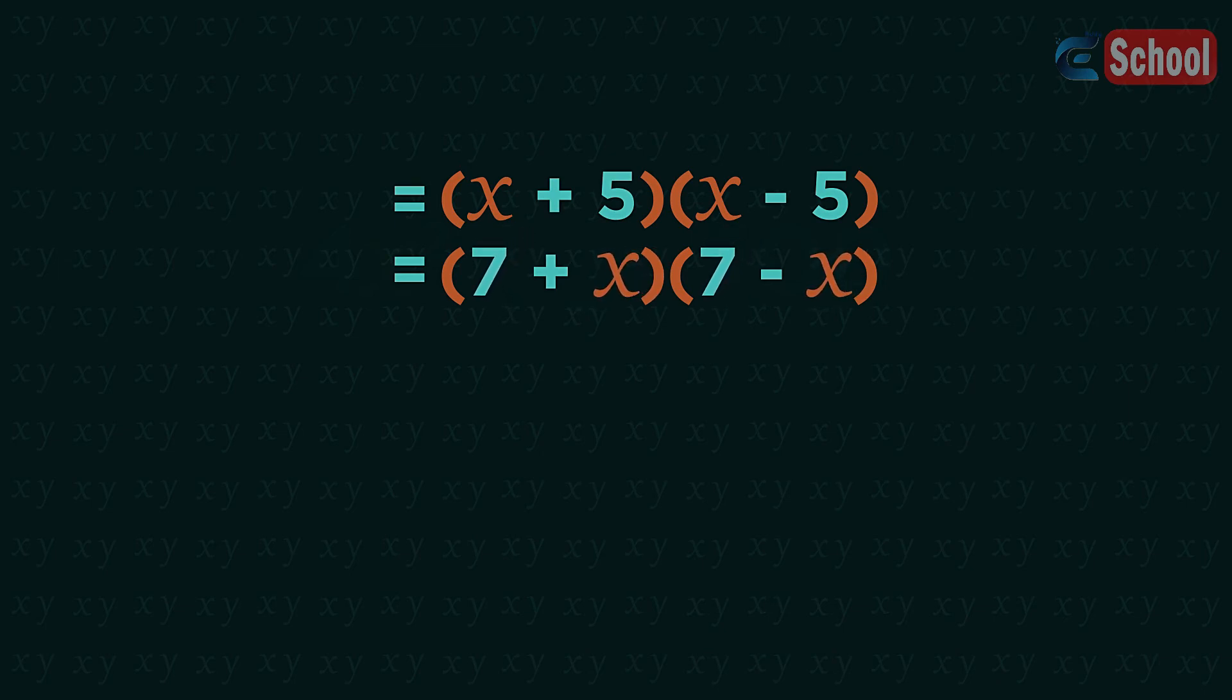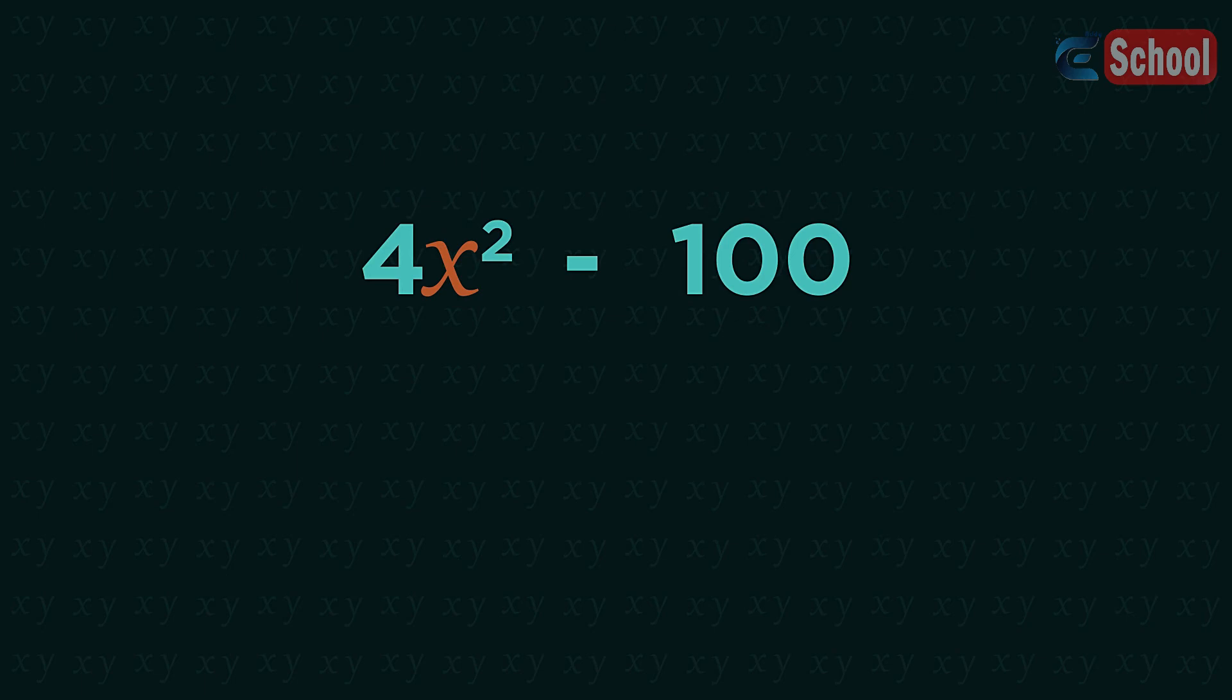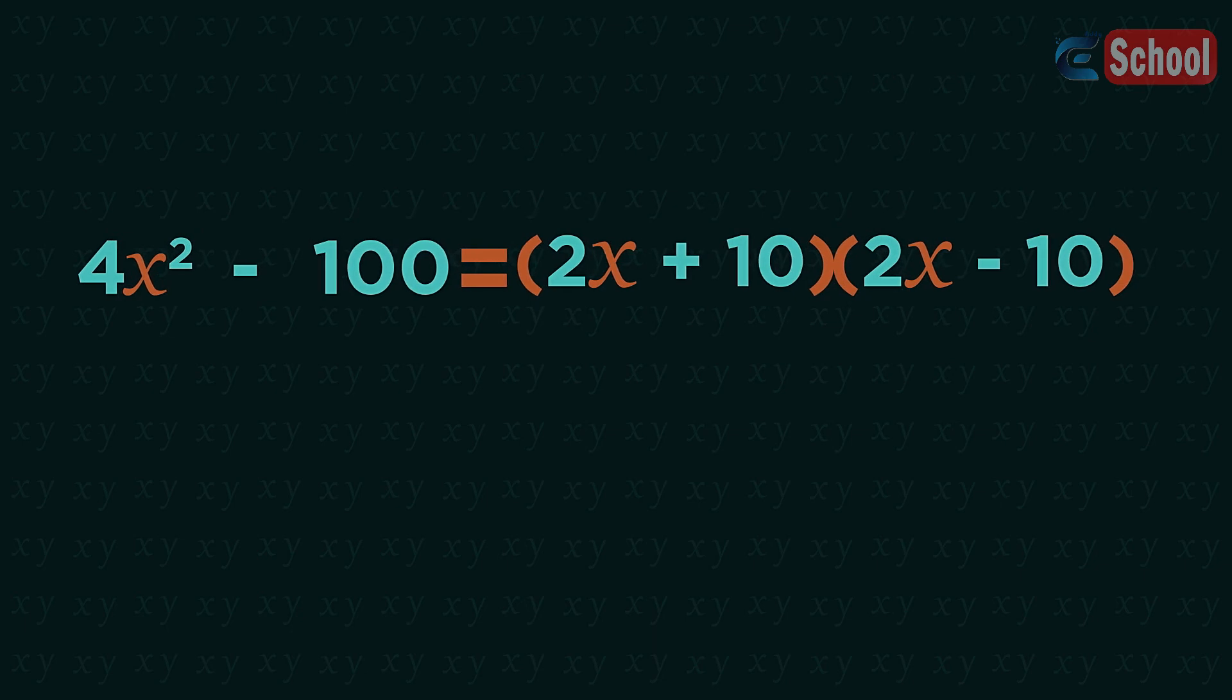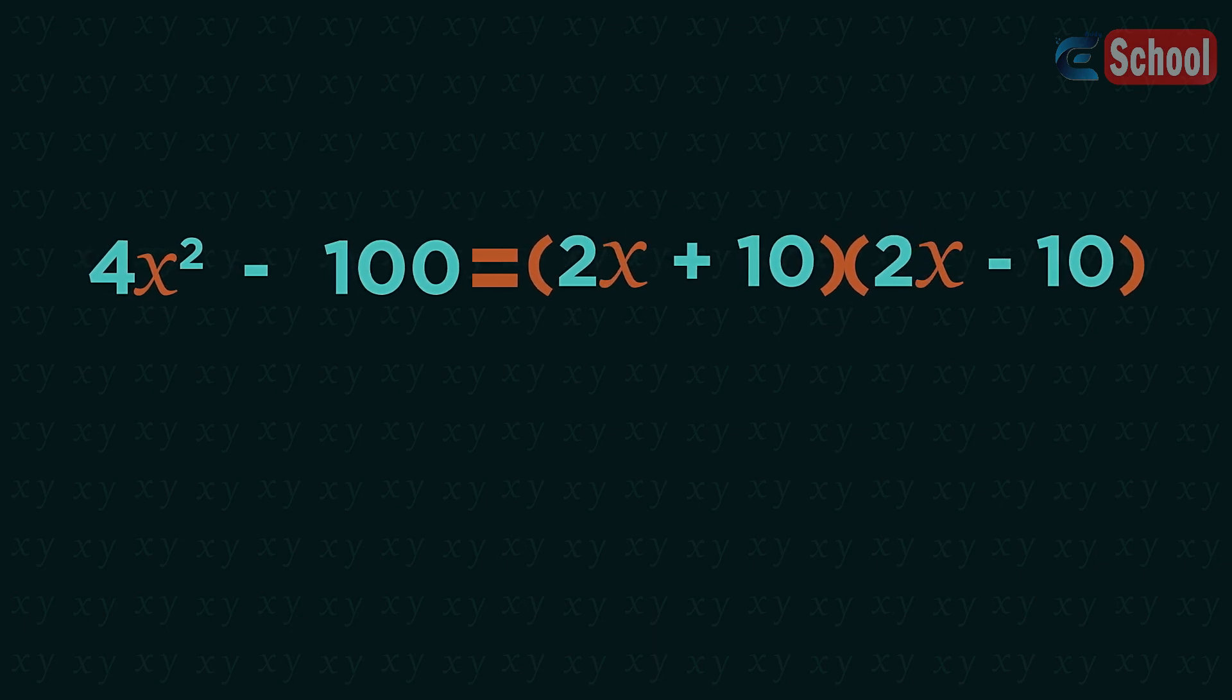So how do you think we factorize this one? Four and one hundred are both square numbers, so we do the exact same thing. But instead of x, we need to do two x because the square root of four is two. Simple.